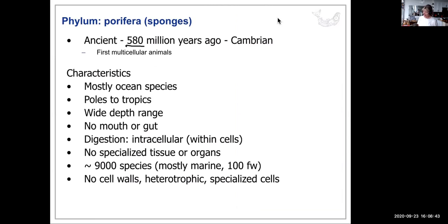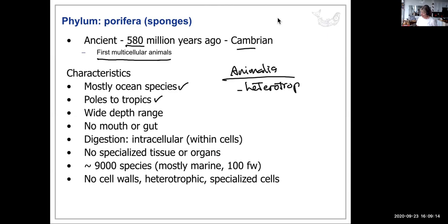Porifera are widespread and very ancient — first evidence about 580 million years ago, during the Cambrian. They're the first known multicellular animals, mostly oceanic at all latitudes with a wide depth range. As heterotrophs, they don't require sunlight. They have no mouth or gut; digestion is intracellular with no specialized tissue or organs. About 9,000 species, no cell wall, but specialized cells.